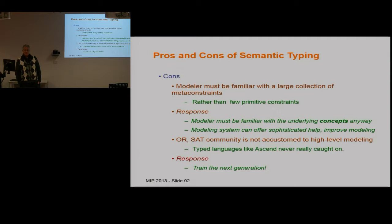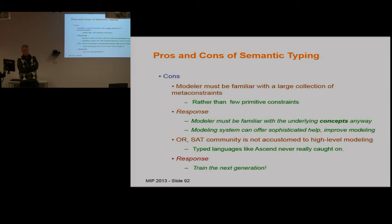In MiniZinc, we introduced functions in addition to predicates — presented at CP last year. The idea is closely related: as soon as you model with functions, you can see syntactically that things are equal, because the same function call in different places means equality. The benchmark used was overlapping all-different constraints, and that works very well. This semantic typing approach seems a bit more powerful because of fully relational modelling — for example with channeling constraints — but it would be interesting to compare them.